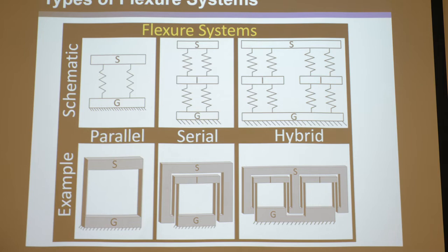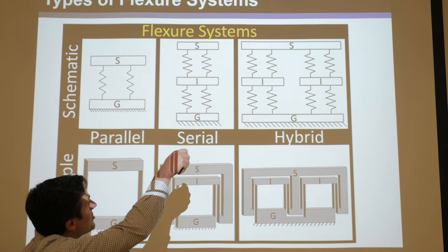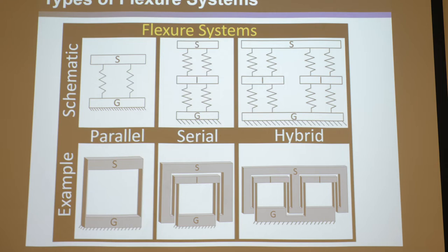Serial flexure systems are multiple parallel systems stacked or nested in series. Here you have one parallel system, and a second parallel system stacked in a serial chain. It can also be nested back on itself: ground to an intermediate body, then from the intermediate body to the stage - serially stacked but nested.